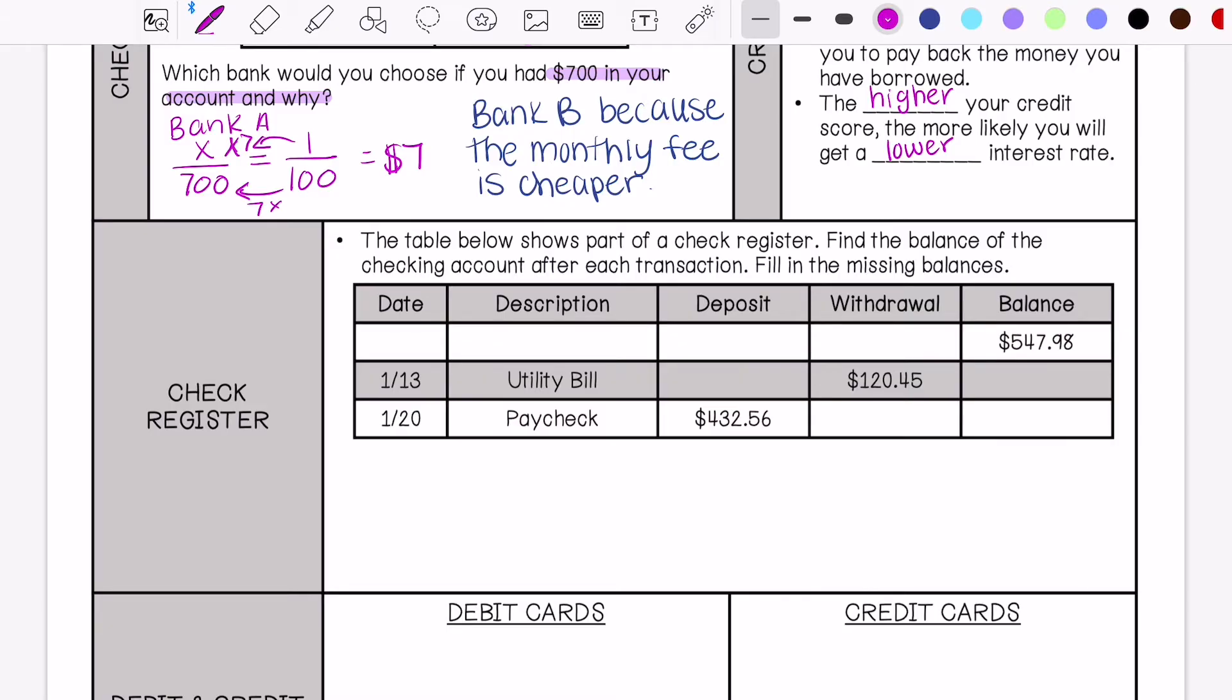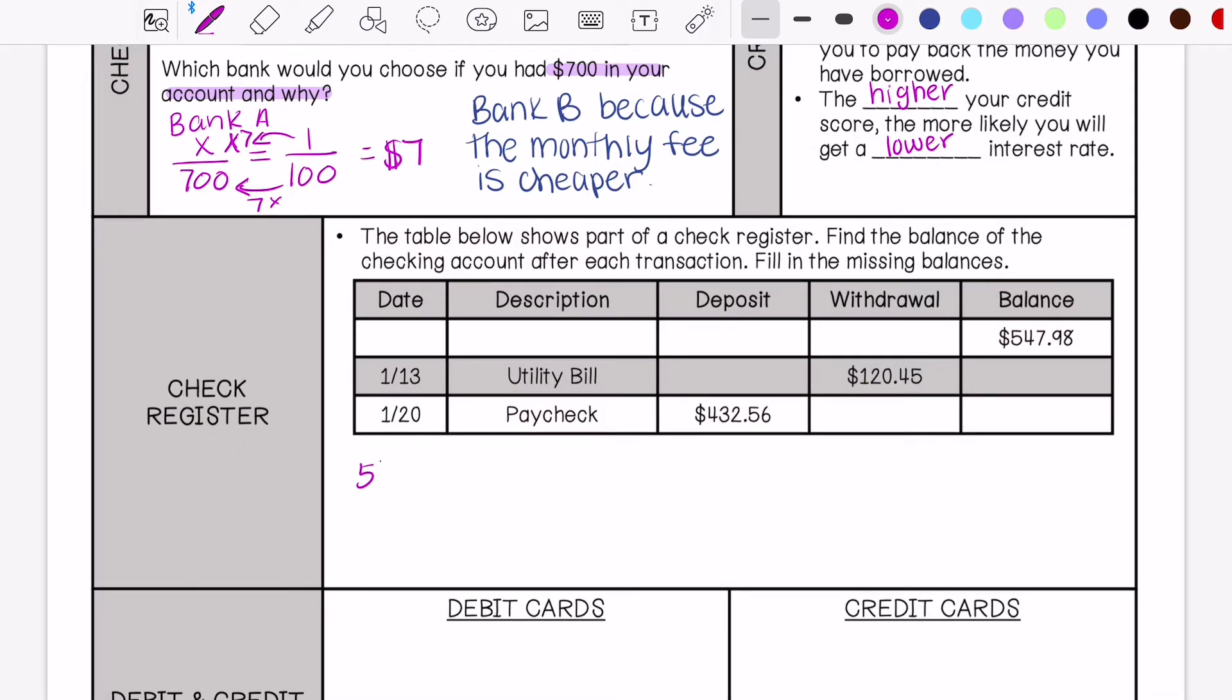You're starting with $547.98 and then you're paying a utility bill that is $120.45. So now you have $427.53, then you get paid and deposit your paycheck into your bank account. So now your new balance is $860.09.